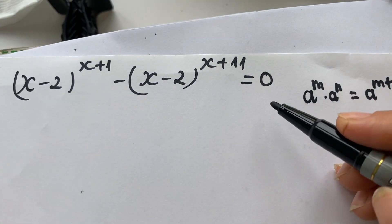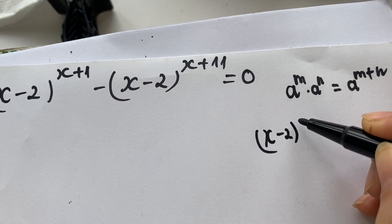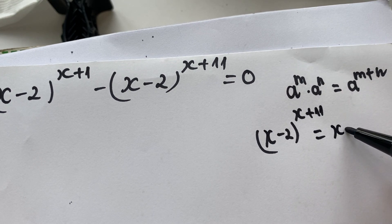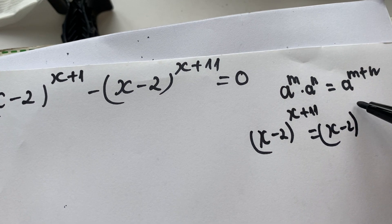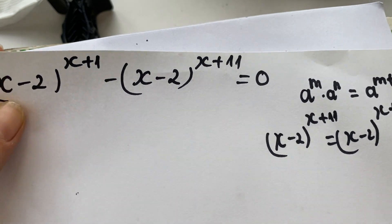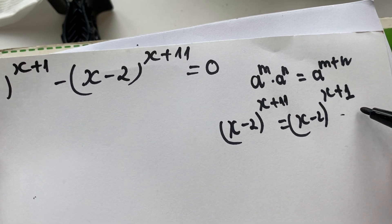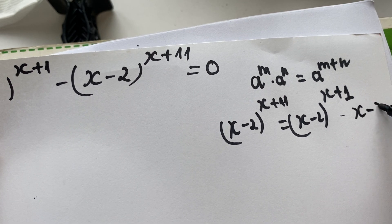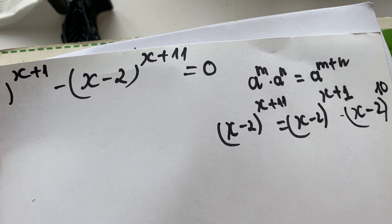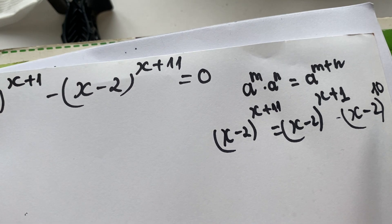We can see that (x minus 2) to the power (x plus 1) is the same as the first term, times (x minus 2) to the power 10. We need to break down 11 as 1 plus 10.